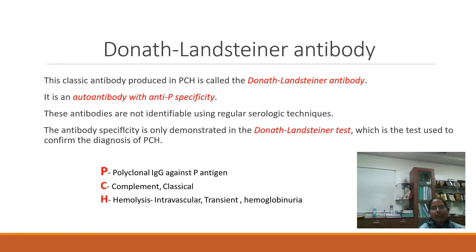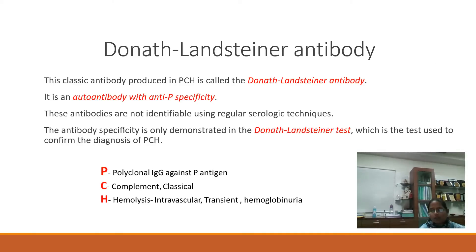This is a very classic antibody produced in paroxysmal cold hemoglobinuria, known as the Donat Landstainer antibody. Specificity-wise, it is an autoantibody in nature with anti-P specificity. These antibodies are not identifiable using regular serological techniques. The specificity is only demonstrated in the DL test, which is the test used to confirm the diagnosis of PCH.